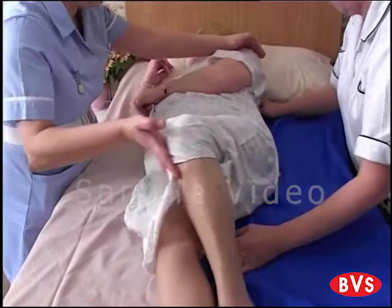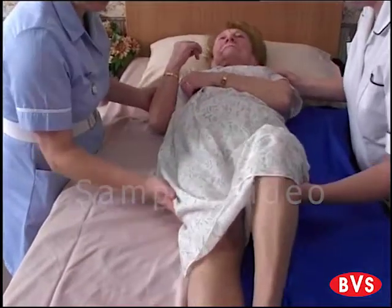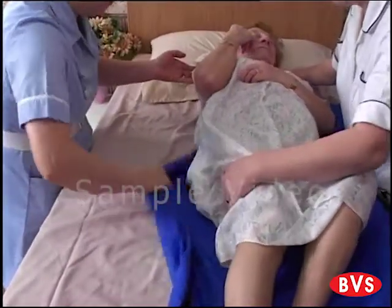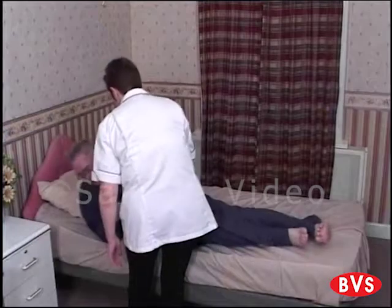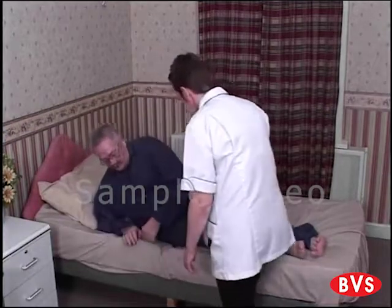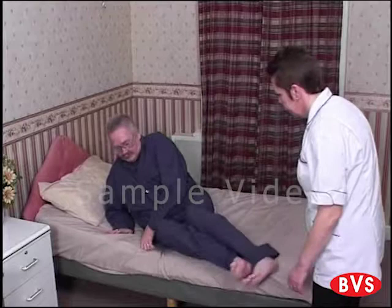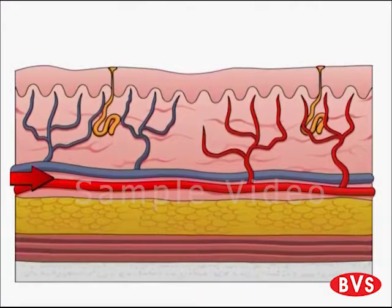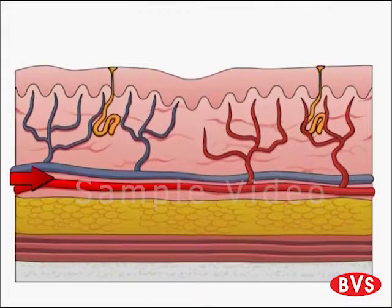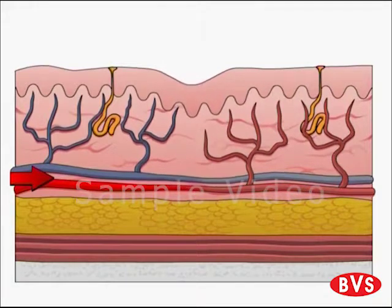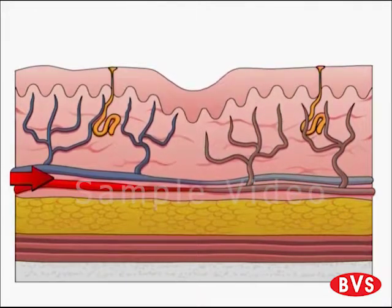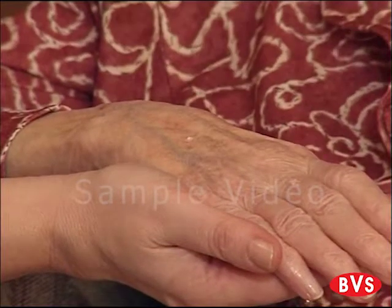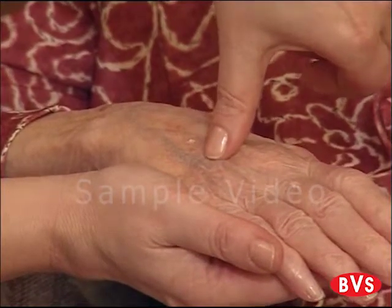Pressure ulcers are caused by the application of pressure to the skin. Shear and friction are other ways we describe the pressure. We will now look at what happens to the skin once pressure is applied. If pressure is applied to the outside of the skin, the blood vessels will become squashed between the outside object and the underlying bone. This is an example of direct pressure and you can see how the blood vessels are being squashed.